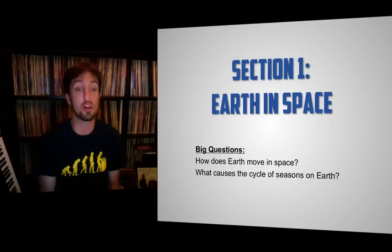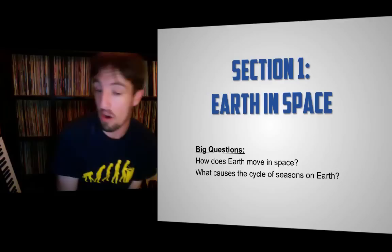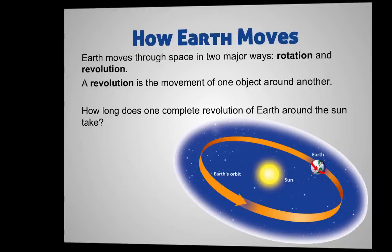Section 1 of chapter 12 is all about Earth in space. The big questions we're going to be discussing are: how does Earth move in space, and what causes the cycle of seasons on Earth? So, let's get into it.